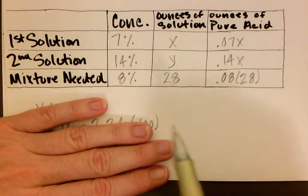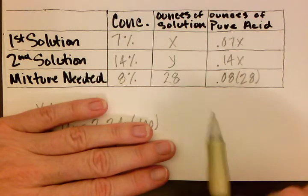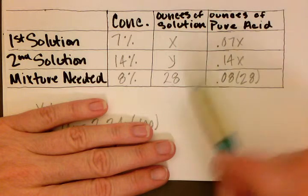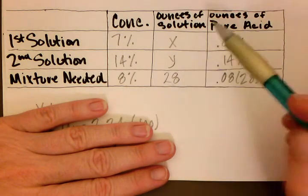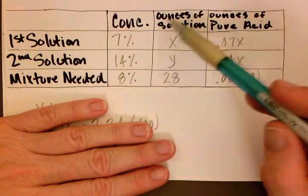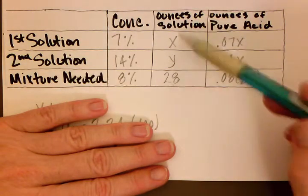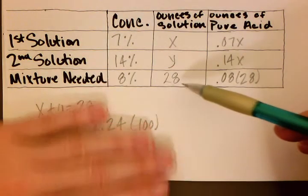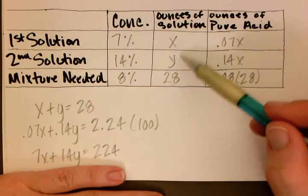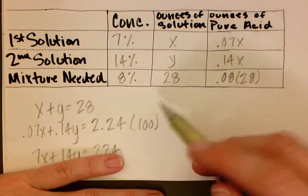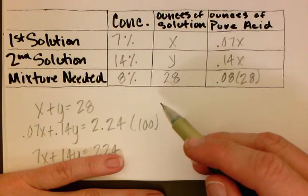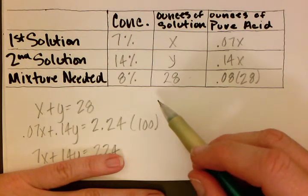So that's how we set up the table. The next thing we want to do is get a system of equations together. The first thing we want is to get the ounces of solution and put that into our first equation. So if we say x plus y equals 28, that will give us our first equation.